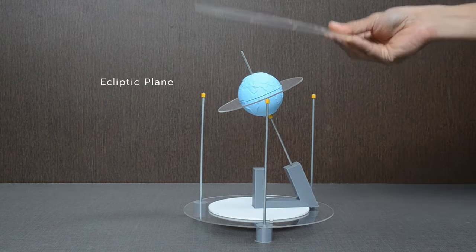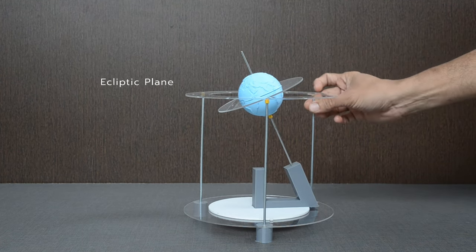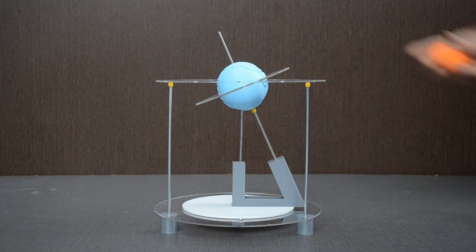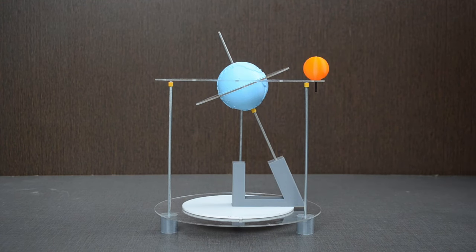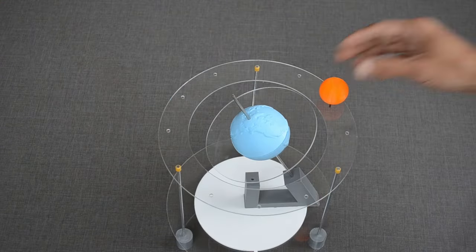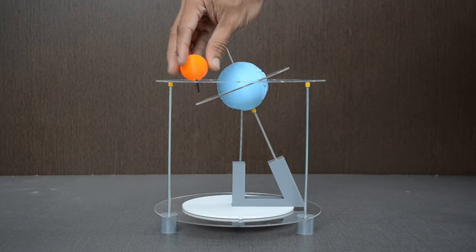This disk represents the ecliptic plane. On this plane, Earth goes around the Sun in one year. For our model, with respect to the Earth, Sun will be on this plane.